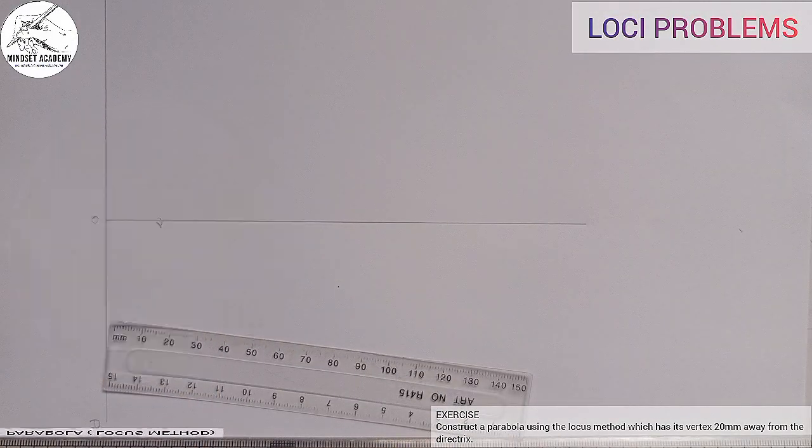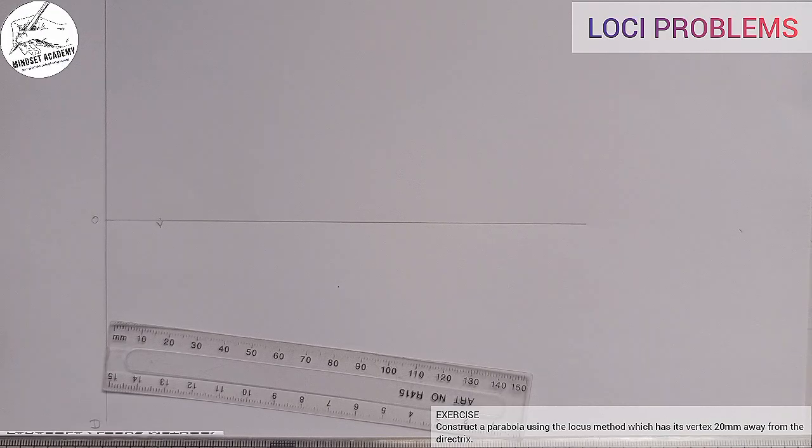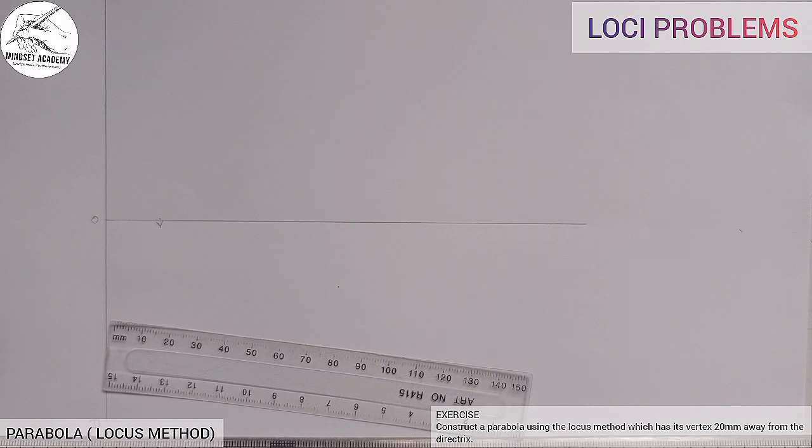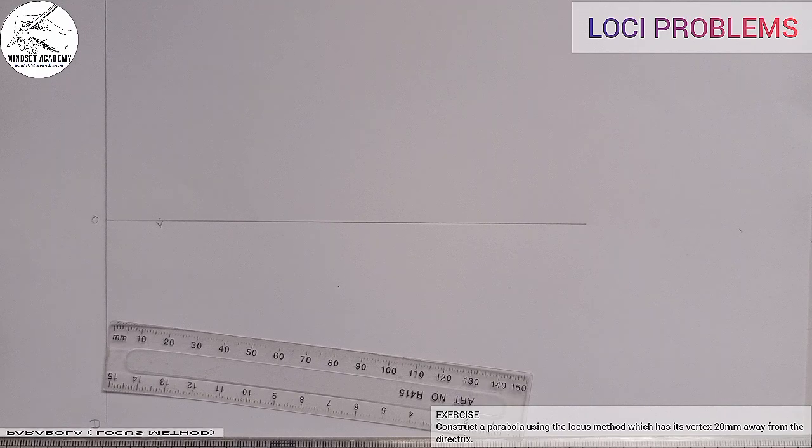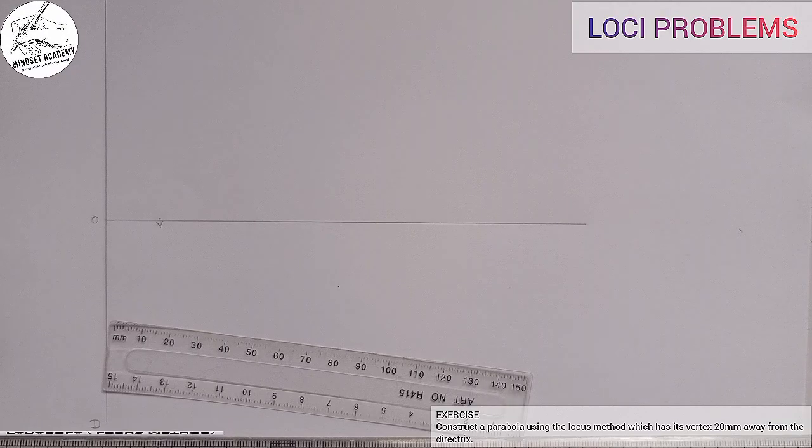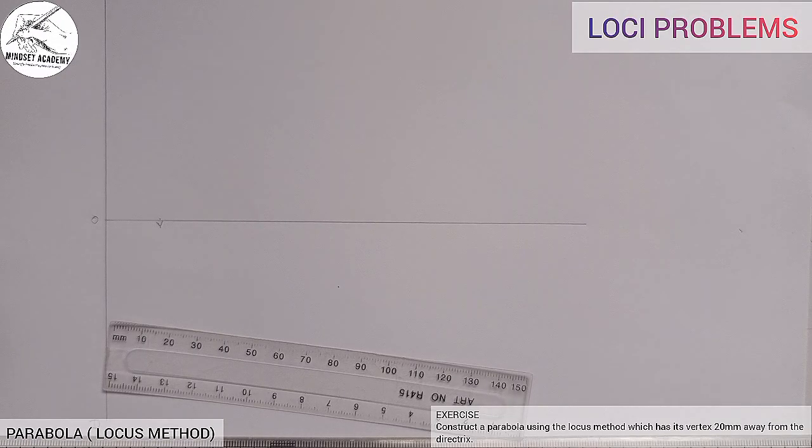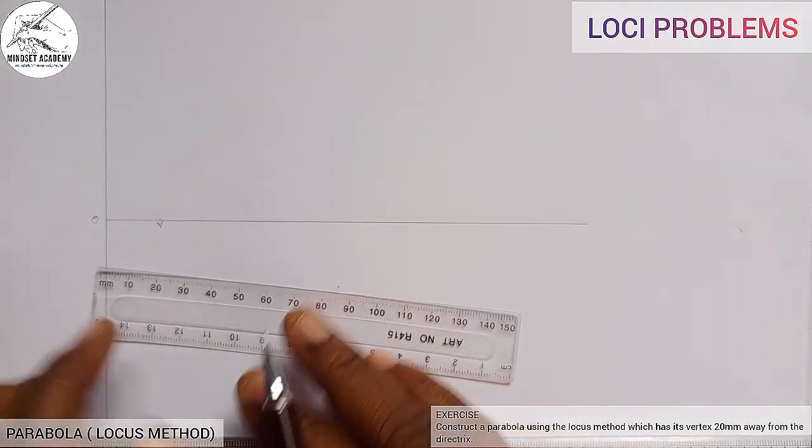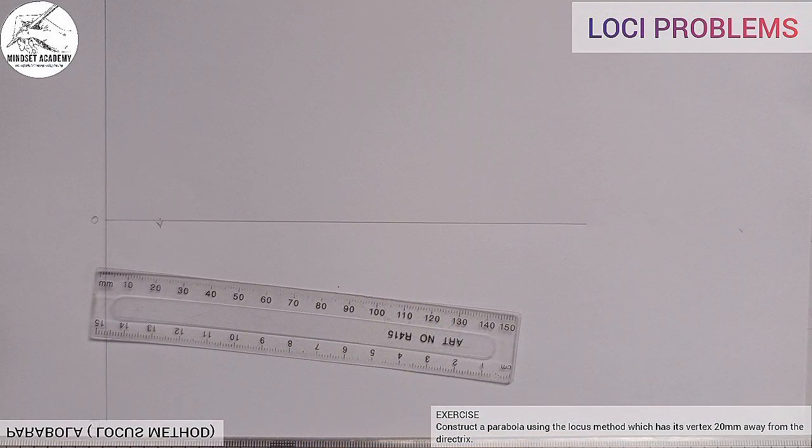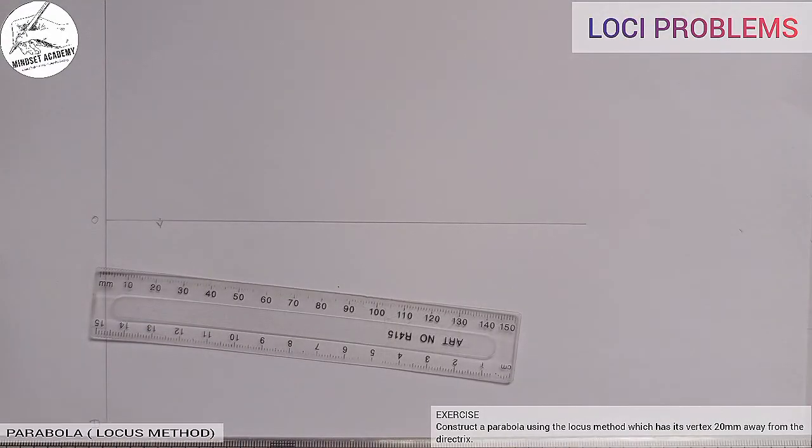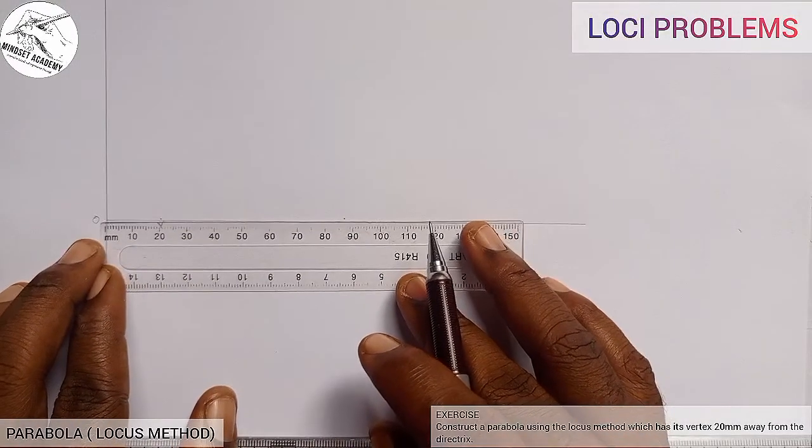Now, one important thing in constructing a parabola is that you should have a focus. And the focus in the parabola, since the eccentricity of a parabola is one, the vertex is twice the focus. I will now multiply my vertex by two, and the distance of the vertex is 20. So if I multiply it by two, it will now be 40.